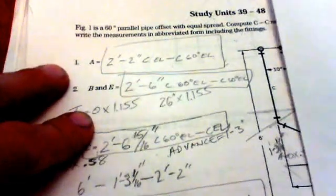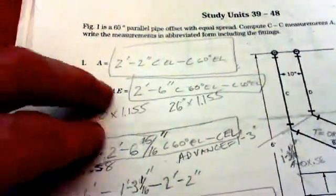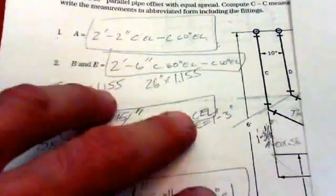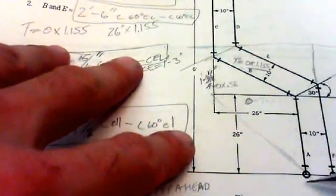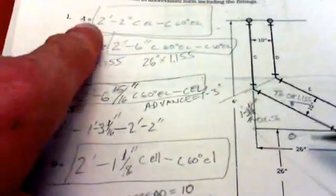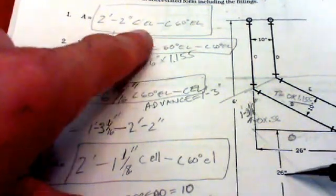Looking at this here, they're looking for these different pipe lengths. The first one that they're looking for is A, which is this guy down here, and they give that to you. What's the length of A? It's right there, 26 inches or 2 foot 2 inches.